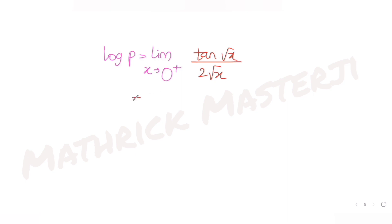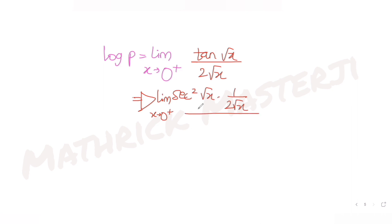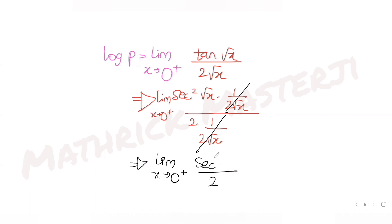Applying the limit gives tan(0) over 2·0, which is again 0/0. So I apply L'Hôpital's rule a second time. The derivative of tan√x is sec²(√x) · (1 over 2√x), and the derivative of 2√x is also (1 over 2√x) with a factor of 2 · (1 over 2√x). The (1 over 2√x) terms cancel from numerator and denominator, leaving limit x tends to zero plus of sec²(√x) over 2.